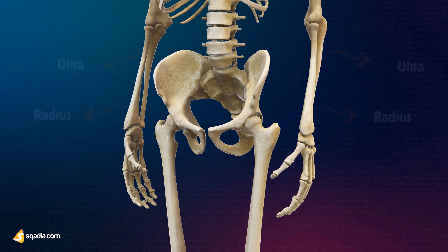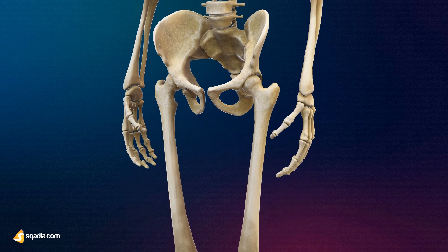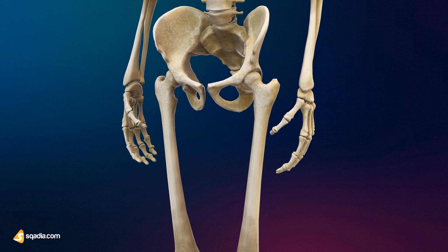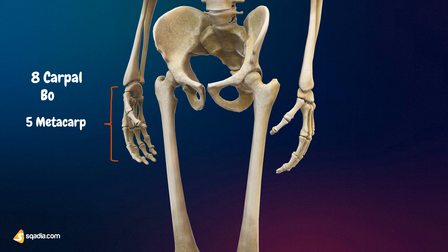Next, there's the wrist, which has eight carpal bones. And finally, the hand, which has five metacarpal bones, and the fingers, which have 14 phalanges in total.